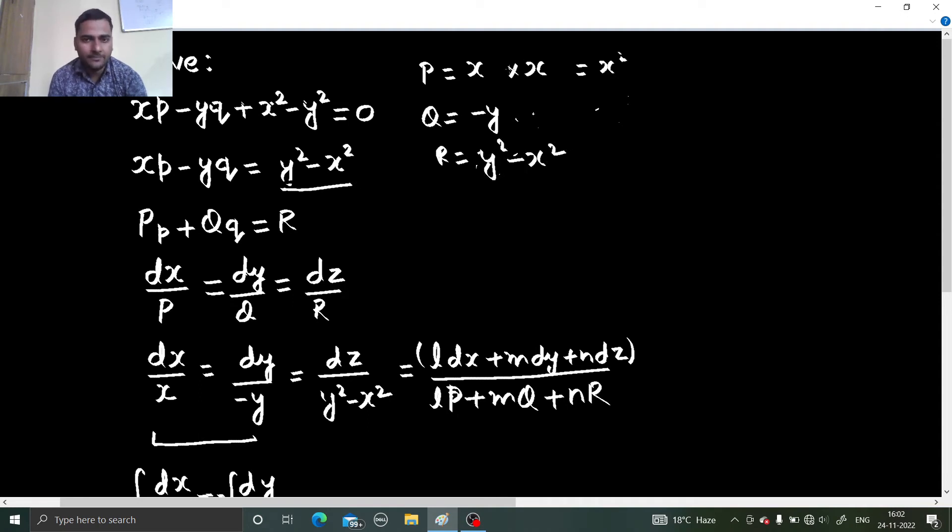If I look at them, first one multiplied by x, this becomes x square. This x square minus x square, gone. This is minus y. If I multiply that by y, this gives me minus y square. When added with this y square, gone. So if I choose L as x, my M as y, and my N as 1. These are multipliers. So L, M, N I got.